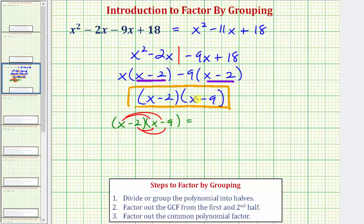So we'd have x times x is x². X times -9 would be -9x. -2 times x is -2x. And finally, we have -2 times -9, which is positive 18, so we have +18.